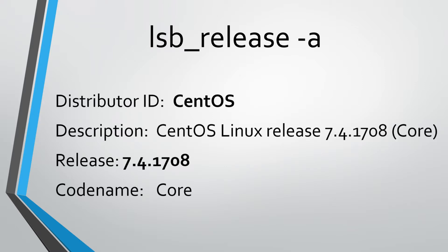You can use the lsb_release -a command to know your operating system and its version. It will give you output including the distributor ID, for example CentOS, the type of operating system, and its version such as 7.4.1708. For your information, LSB stands for Linux Standard Base. Usually this command comes with the default installation of Linux OS, but if it doesn't, you can install the lsb-core package.